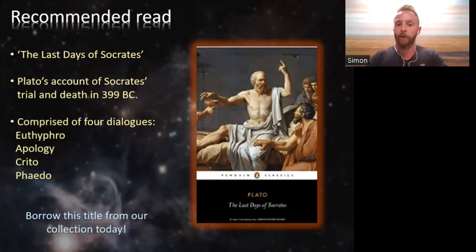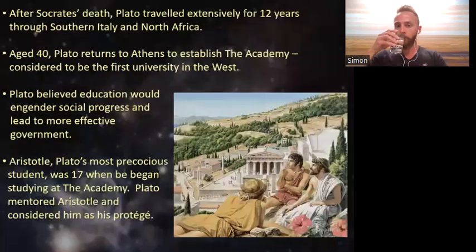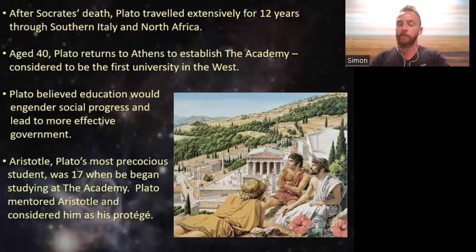In the Crito, Socrates refuses an entreaty from his close companions to escape from prison. And in the final dialogue, the Phaedo, Socrates faces his impending death with calmness and contemplates the nature of the soul and an afterlife. Following the death of Socrates, Plato traveled for about 12 years throughout southern Italy and North Africa, where he met many other teachers, philosophers, and mathematicians, and further developed his own ideas about reality and the universe.